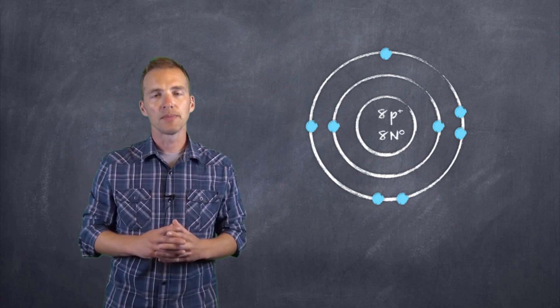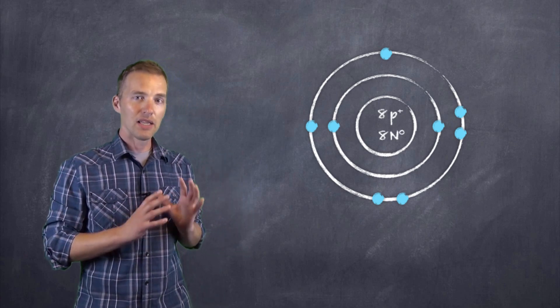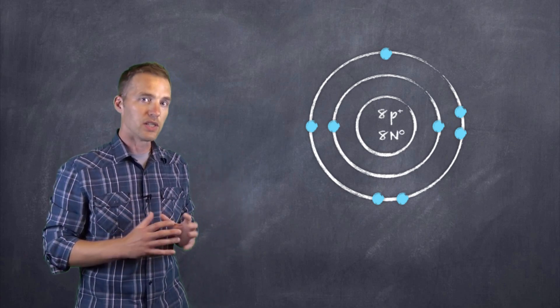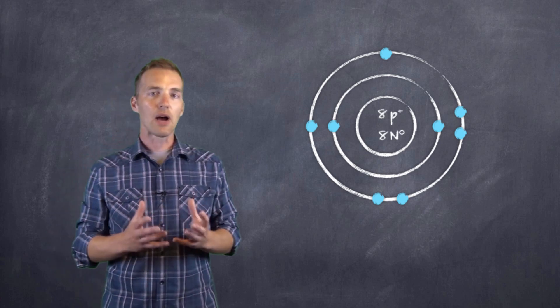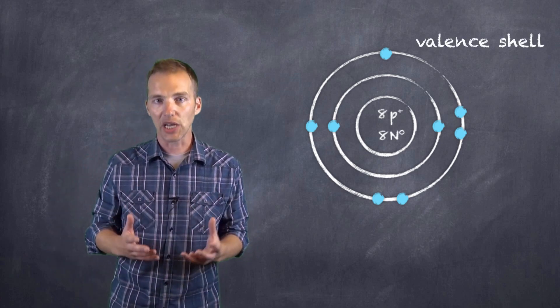What about those Lewis structures? Well, let's take a look at this Bohr-Rutherford diagram in a little more detail before we move on. You can see that we have this outer ring, and this outer ring is what we refer to as the valence shell.